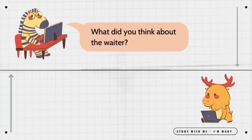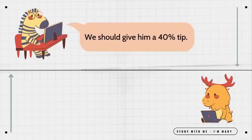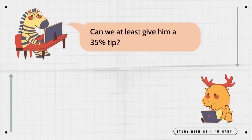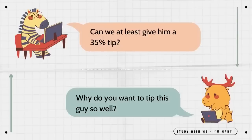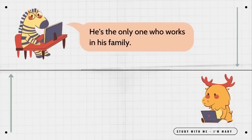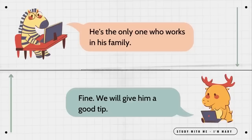What did you think about the waiter? He was nice. We should give him a 40% tip. That's too much. You said he was nice. He was nice, but he wasn't excellent. Can we at least give him a 35% tip? Why do you want to tip this guy so well? He is my friend from school. Oh, I see. He's the only one who works in his family. Fine. We will give him a good tip.